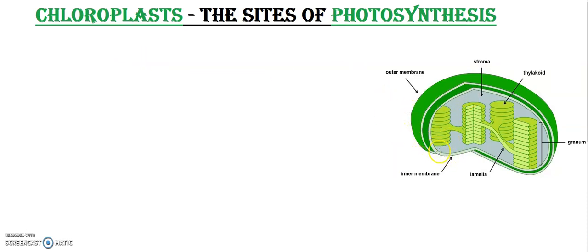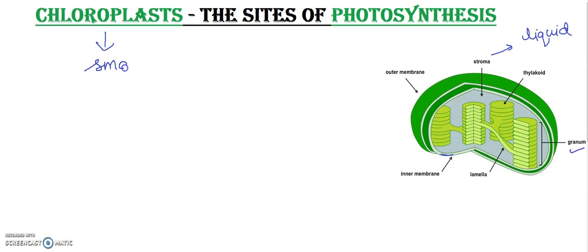In the structure of chloroplasts, you can see the inner membrane and the outer membrane. The liquid filled inside the chloroplast is called stroma. This is the thylakoid membrane, and each thylakoid is piled on one another — together they are called a granum. The chloroplast has a small disc-like or convex-shaped structure.